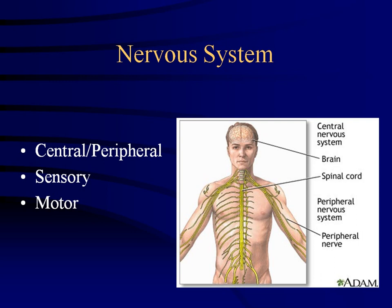The central nervous system consists of your brain and spinal cord. The peripheral nervous system consists of everything outside of that.